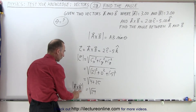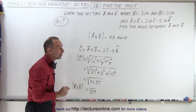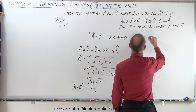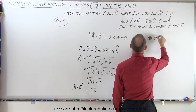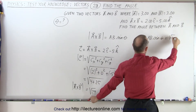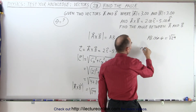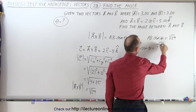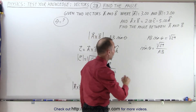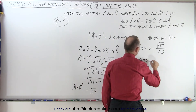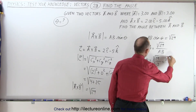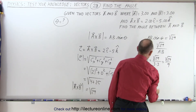So the magnitude of a cross b is the square root of 29, the magnitude of a is 3, and the magnitude of b is 3. We can write that the magnitude of a times b times sine of theta equals the magnitude of a cross b, which means sine of theta equals the square root of 29 divided by the magnitude of a times the magnitude of b — that's the square root of 29 divided by 3 times 3, which is the square root of 29 divided by 9.